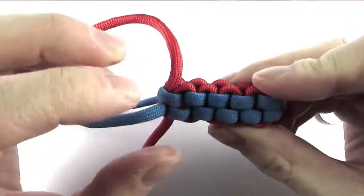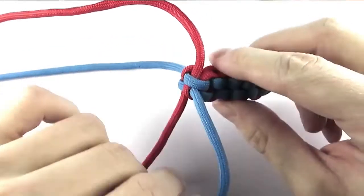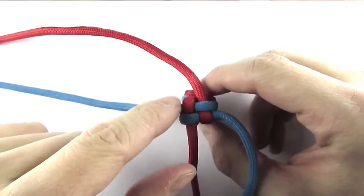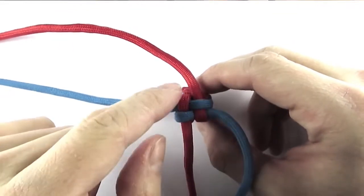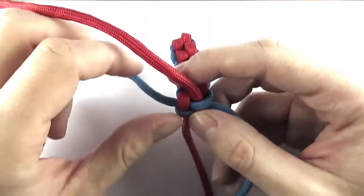Okay I'm back and I've made the sufficient length of the keychain that I want. At this point you can simply cut off the ends and melt them, and that will give you the finished keychain.